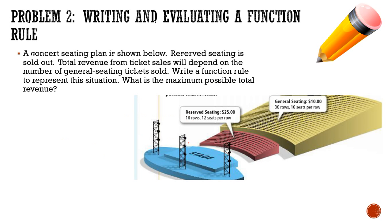So let's look at this one. A concert seating plan is shown below. Reserve seating is sold out, so I'm out of reserve seating. Total revenue from ticket sales will depend on the number of general seating tickets sold. Write a maximum rule to represent this situation.